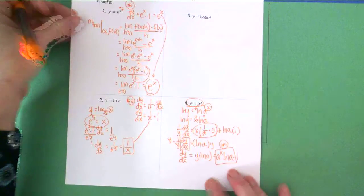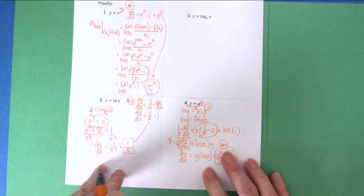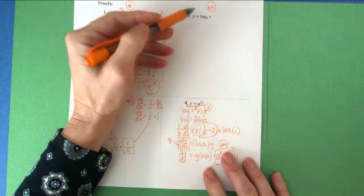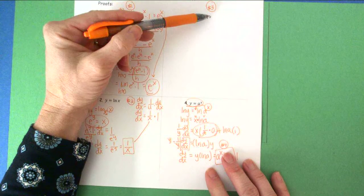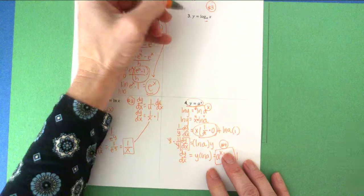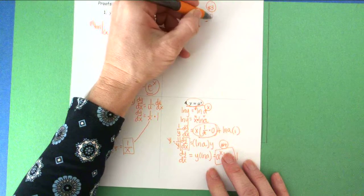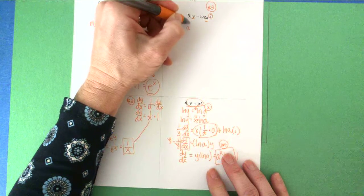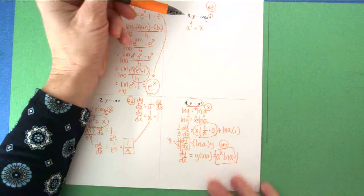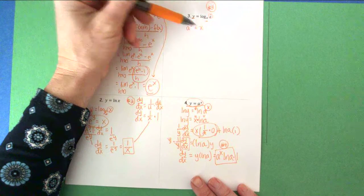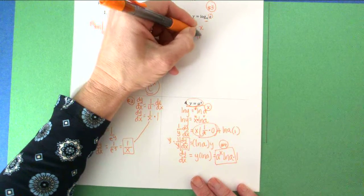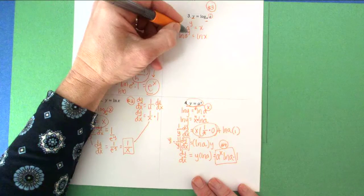Last but not least, number three — the proof of formula three from yesterday's formula page. I'm going to start the derivative by rewriting this logarithm in its exponential form. So I take a^y and set it equal to x: a^y equals x. I am going to find the ln of both sides: natural log of a^y equals natural log of x. I'll bring the y to the front: y times natural log of a equals natural log of x.